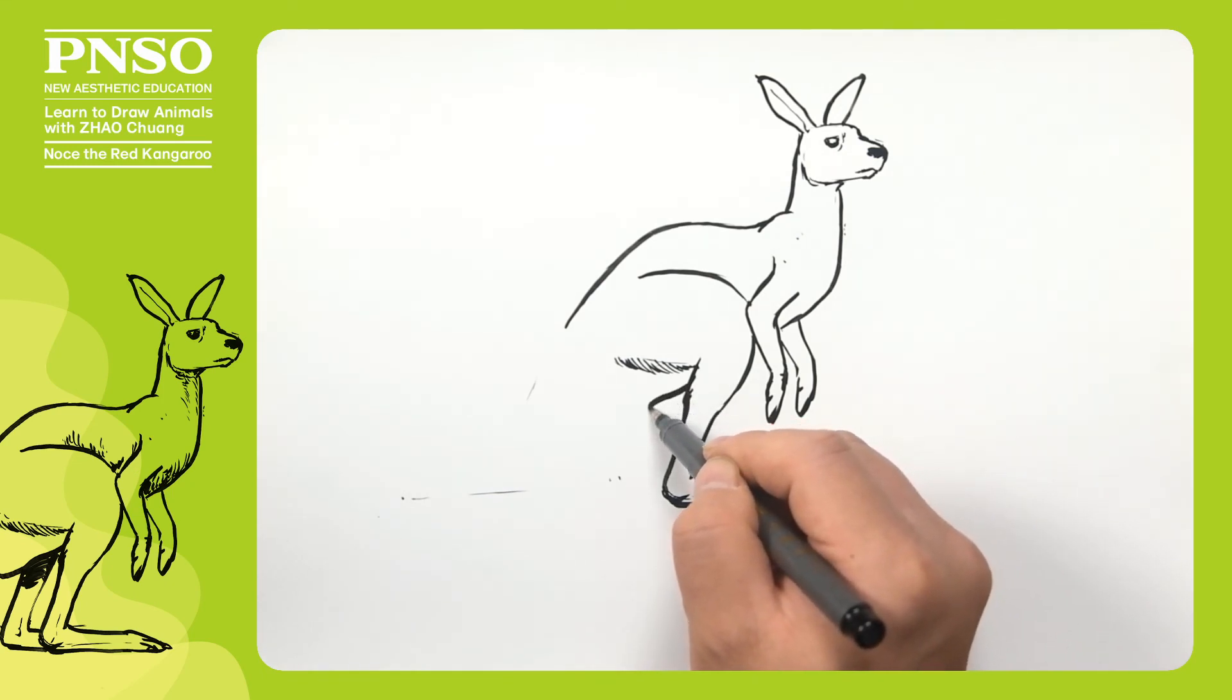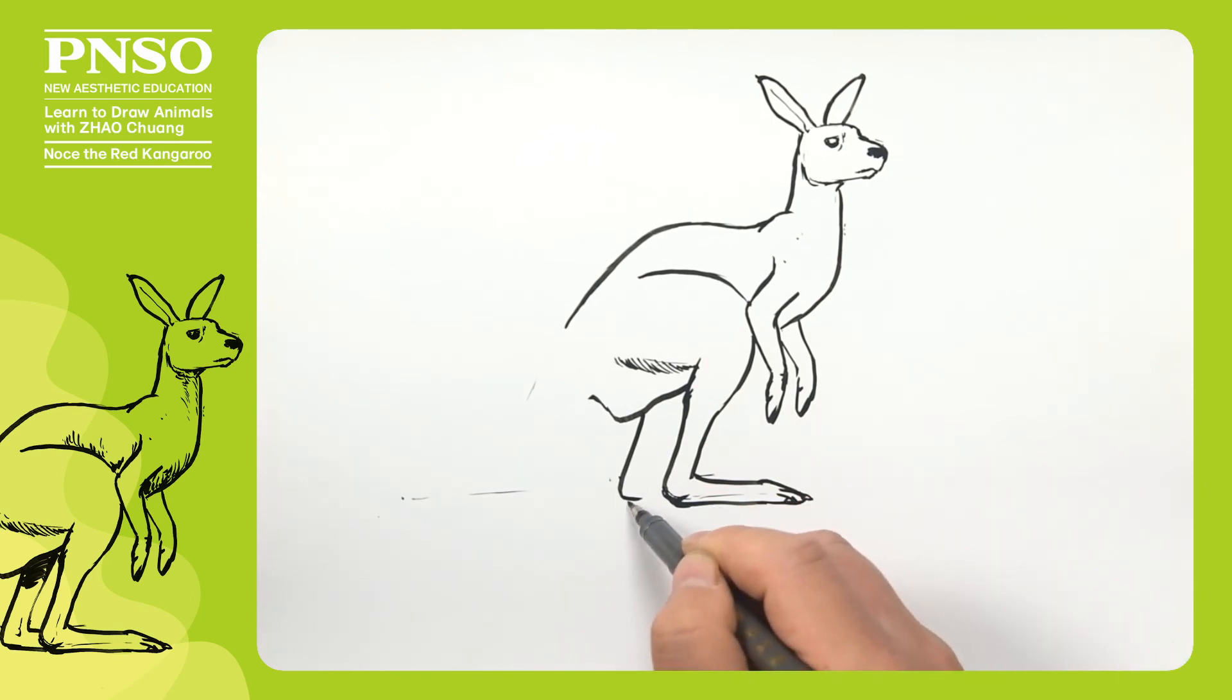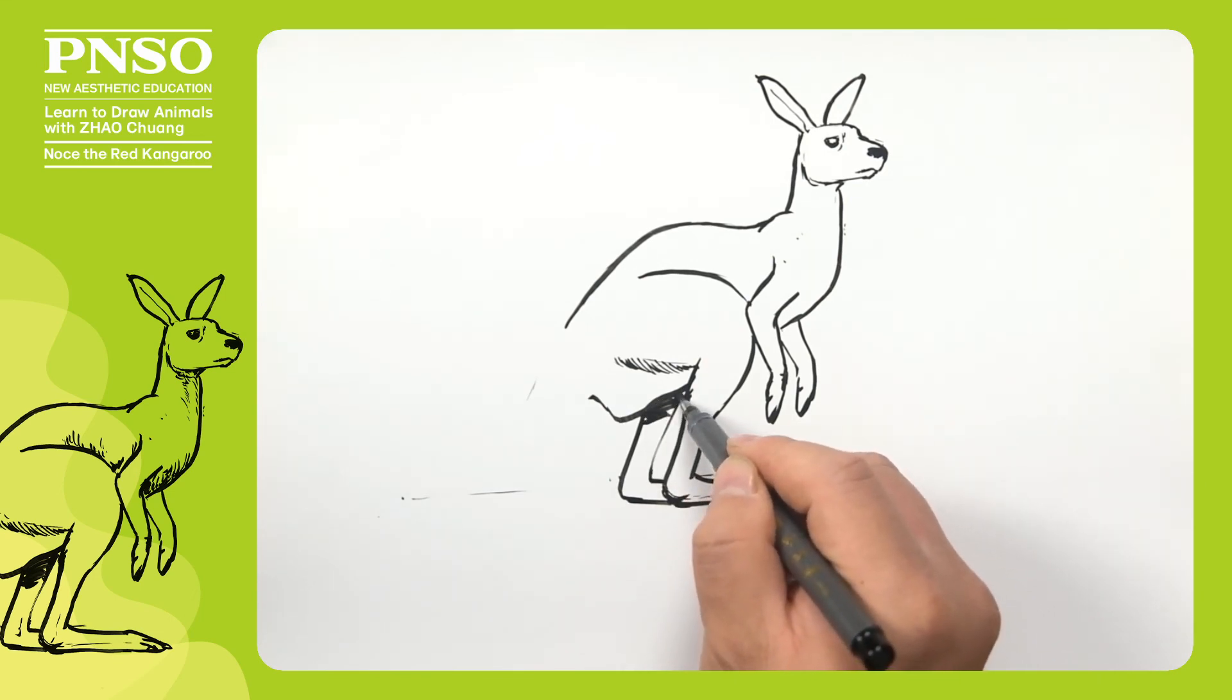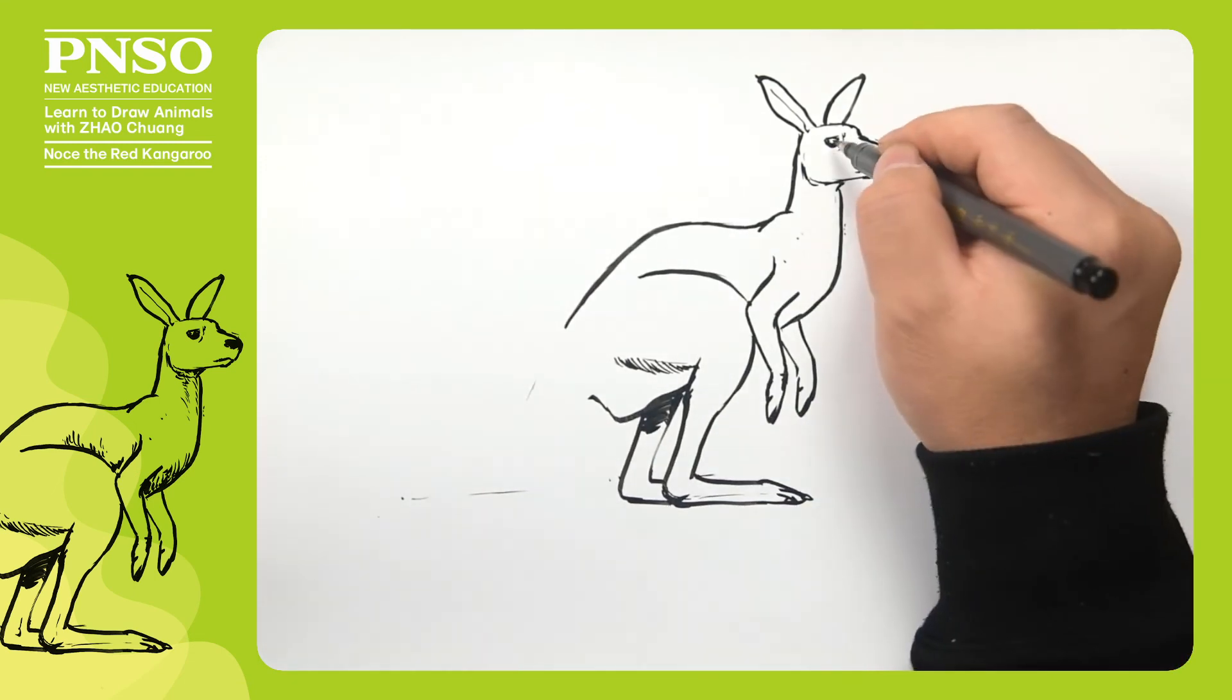Then let's draw its abdomen and the other leg. Here, we can draw some shadows.